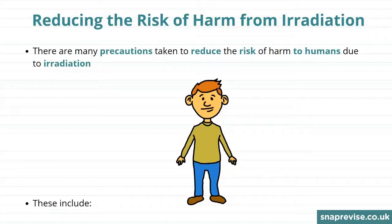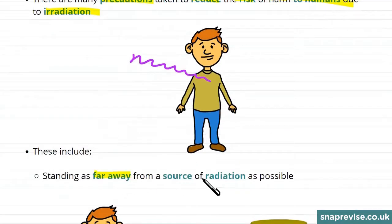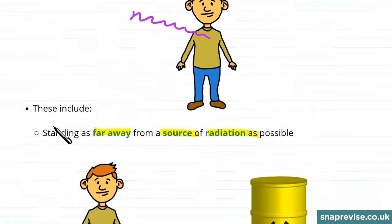So we know that irradiation, radiation hitting us from the outside, can be dangerous. There are many precautions that we can take to reduce the risk of harm to humans due to irradiation. So how can we reduce the chance of any of the types of radiation hitting us and causing us damage? Well, one easy precaution we can take is to stand as far away from a source of radiation as possible.